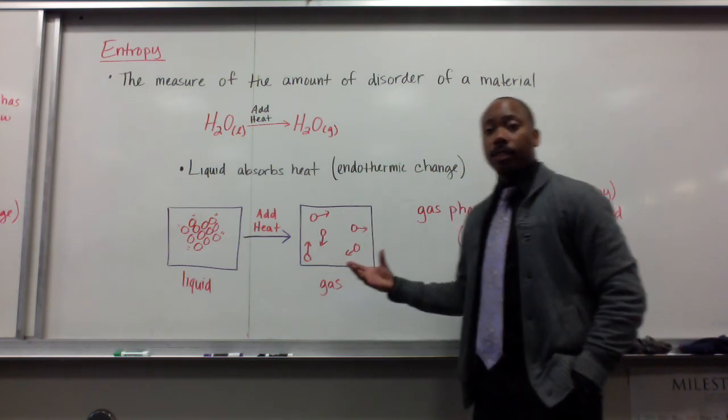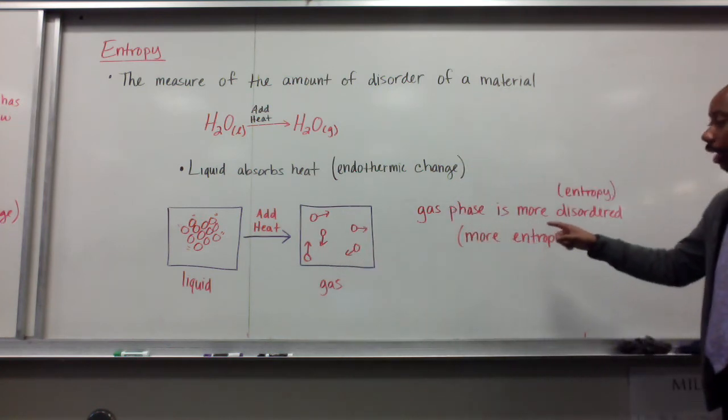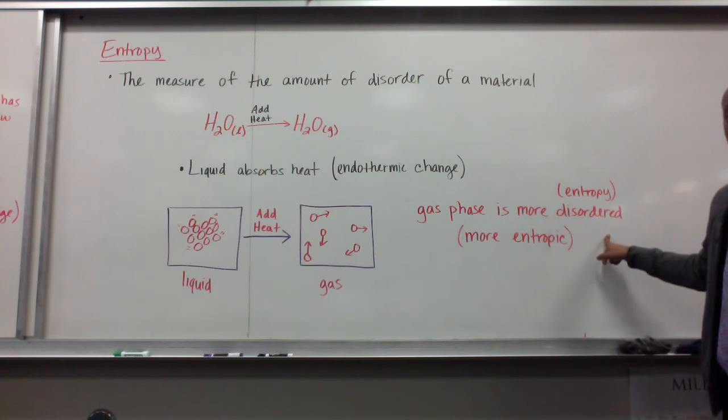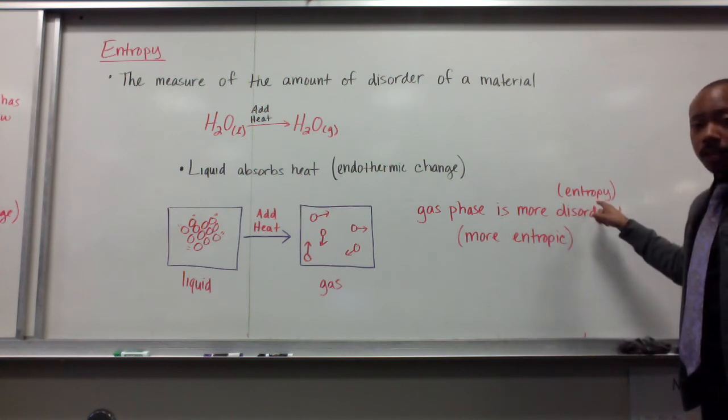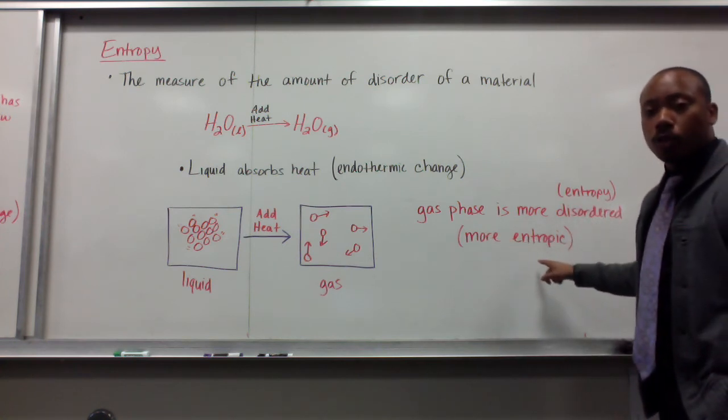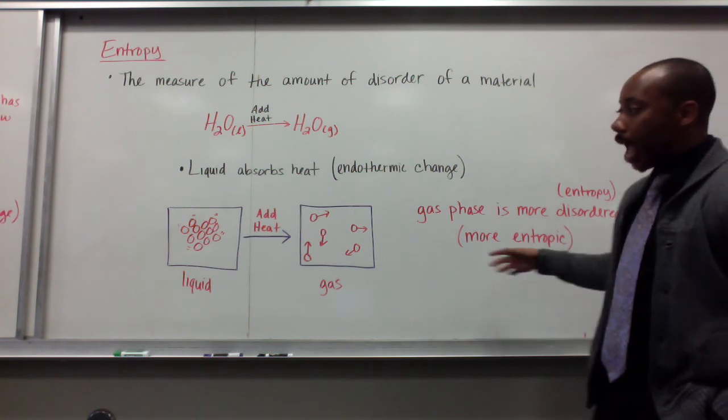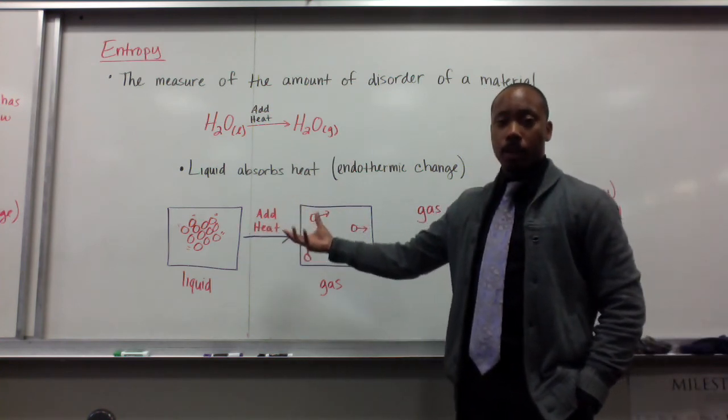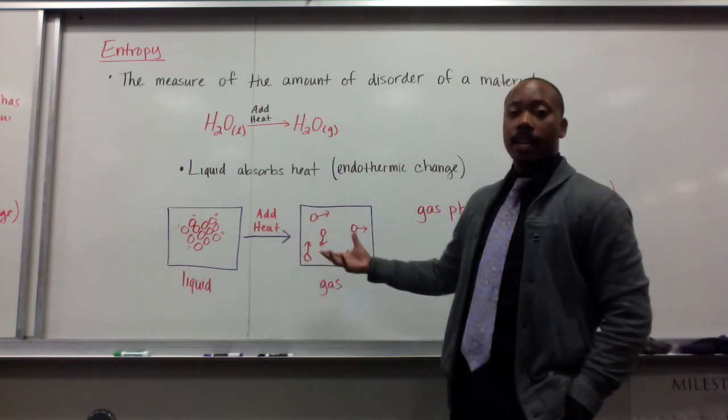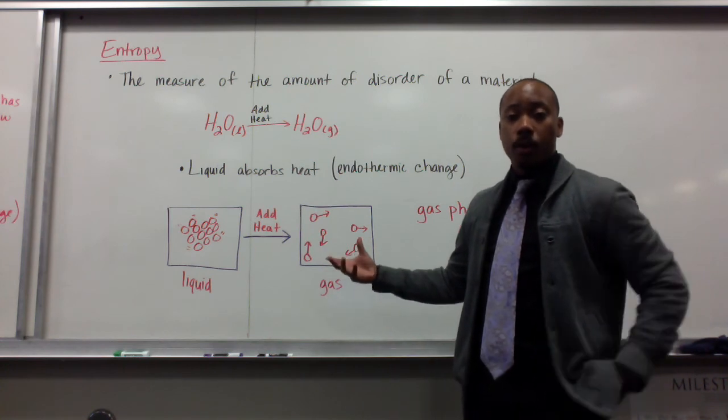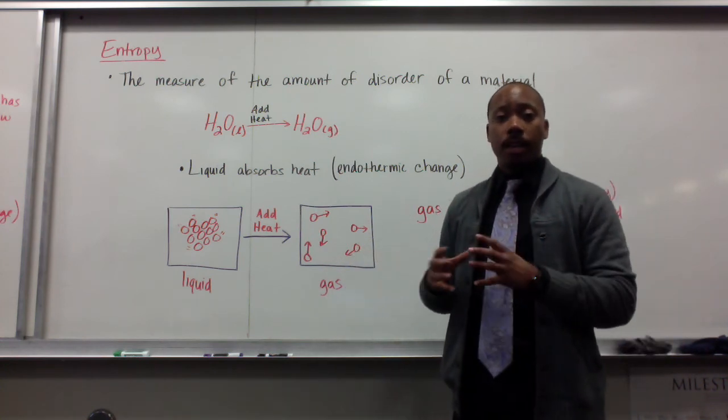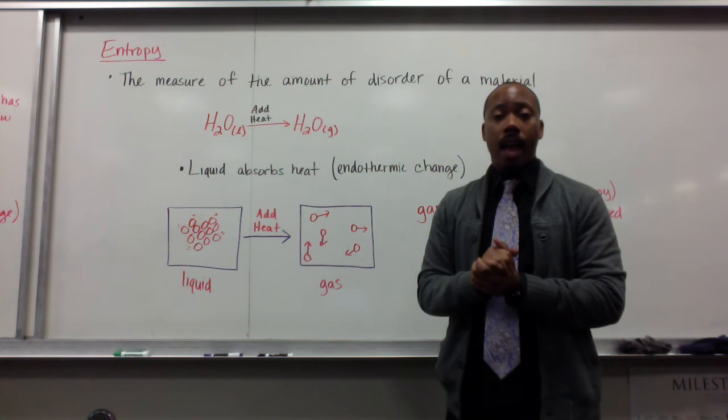So, with that, we would say that the gas phase is more disordered. The gas phase has more entropy, or it is more entropic. So, as we add in energy in this endothermic change and create a gaseous substance, we know gases have more kinetic energy. They are more disordered. They have more entropy.